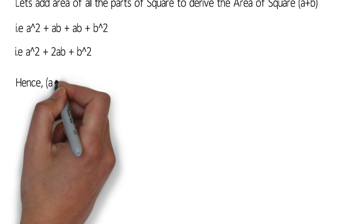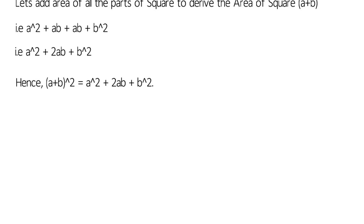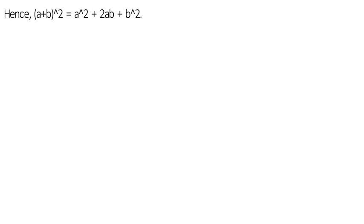Hence, (a+b)², the area of the square with side a+b, is a² + 2ab + b².